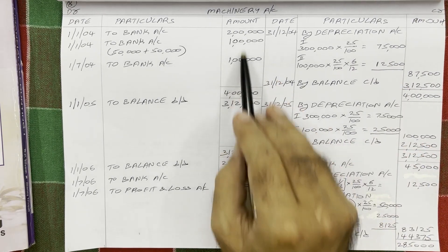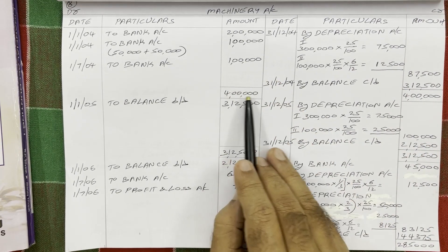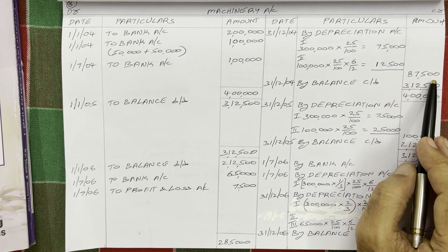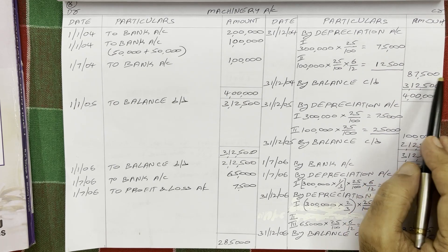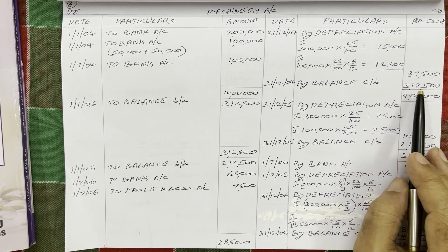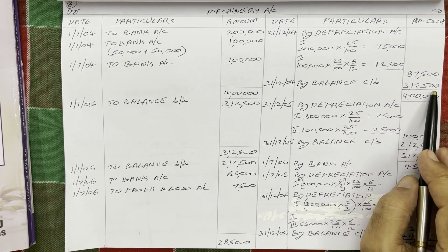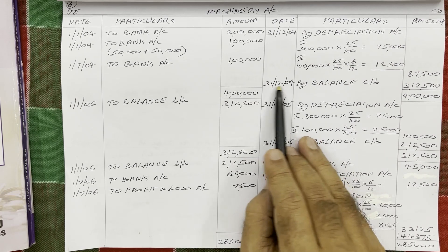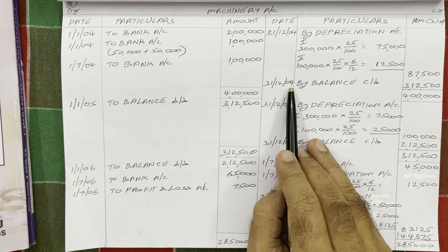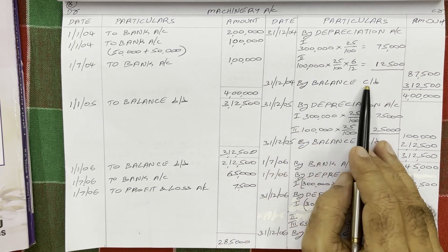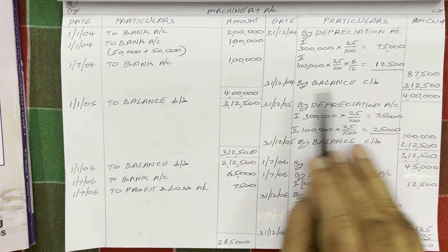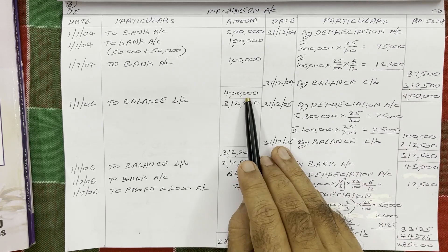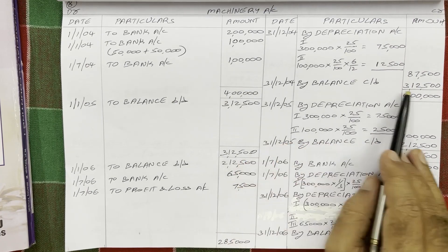Finally, balance carried down: debit total 4 lakh rupees minus credit amount 87,500 equals 3 lakh 12,500. Date is 31st December 2004, by balance carried down. The highest total on both sides is 4 lakh.